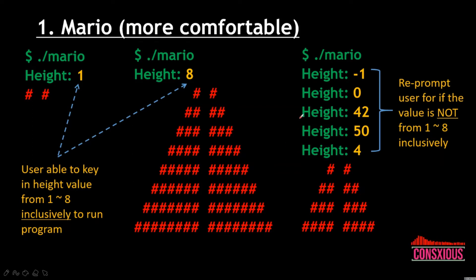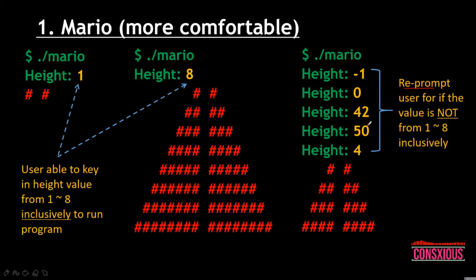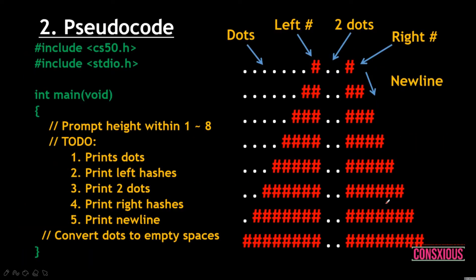If the user keys in a value not in the range of one to eight, the program will re-prompt the user. For example, negative one, zero, 42, and 50 are not valid values. If the user keys in four, the program will output the corresponding pattern.